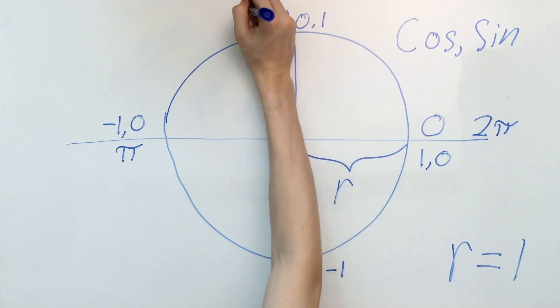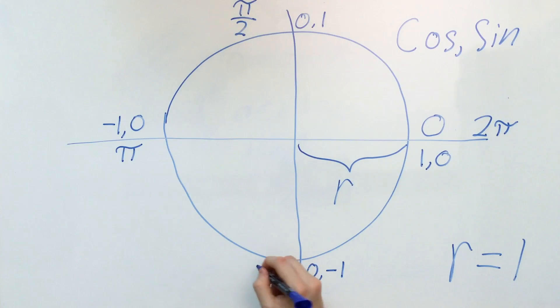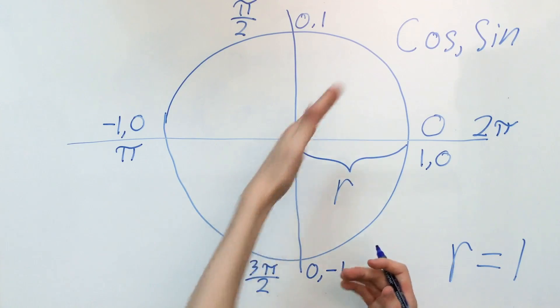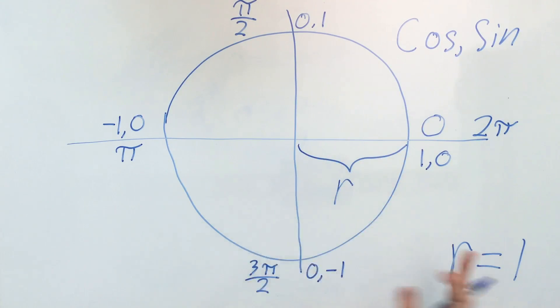Now up here, this would be pi over 2. And down here, this would be 3 pi over 2. And, of course, you can do these very similarly for 45 and that kind of stuff as well. 45, 30, 15, whatever you want.